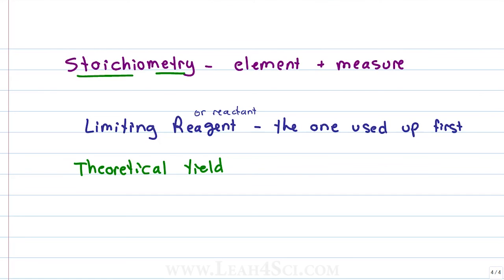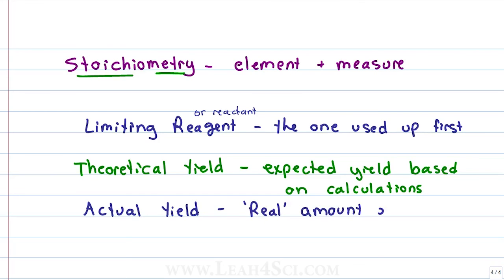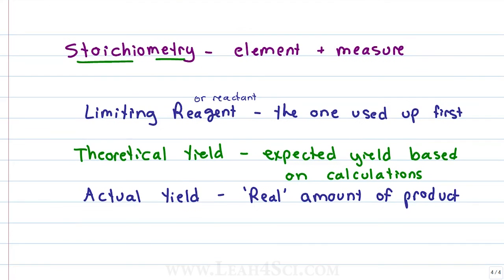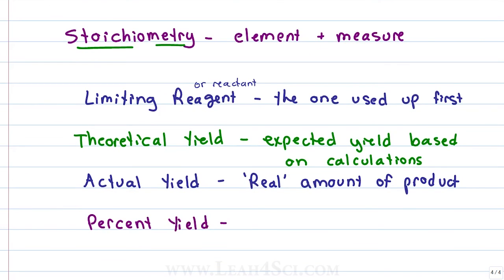The theoretical yield tells us the predicted amount of product that would form if everything reacts according to plan. But we know life never goes according to plan, and if we expect 100% of something to come out, we get less. That less is called the actual yield. The actual yield should always be less than your theoretical yield because things happen along the way that reduce the yield. If you want to find out how far off the actual is from the theoretical, you calculate percent yield, which is a ratio of actual and theoretical.